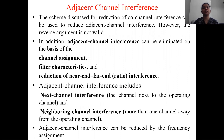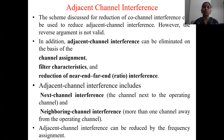Co-channel interference is caused by co-channel cells — cells which are using the same frequency. Because of using the same frequency, there is obviously interference, and that interference is called co-channel interference. But coming to non-co-channel interference, not only the co-channel channels using the same frequency result in interference, but other channels which are adjacent or neighboring also result in interference.